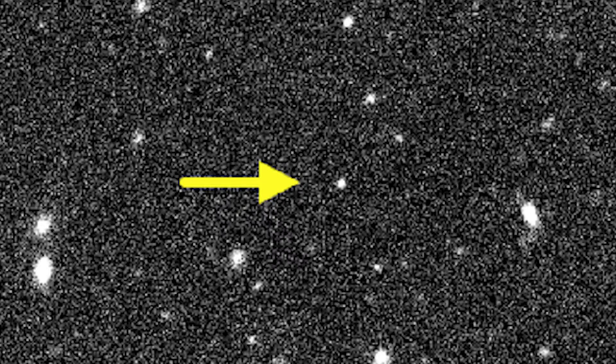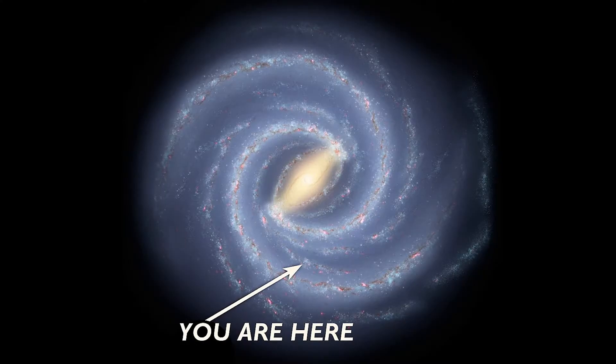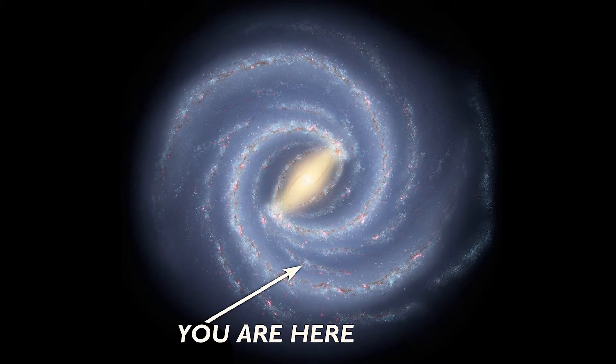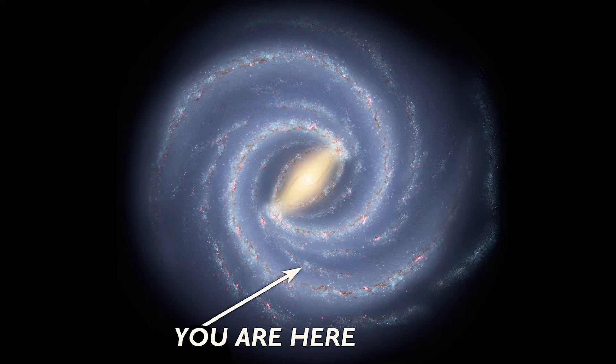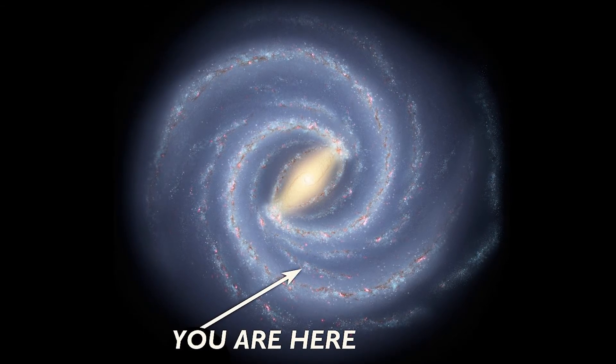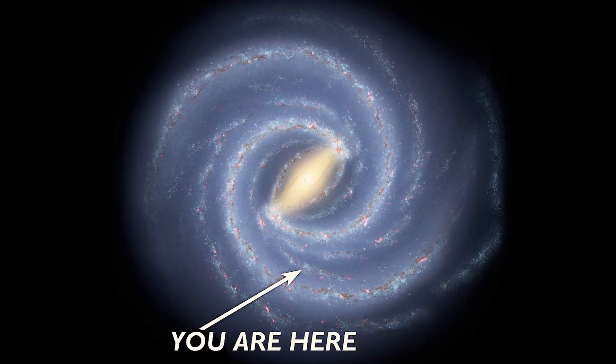So far, there are only two confirmed rogue planets. But considering the fact that the Milky Way contains an estimated 400 billion stars, and the fact that there are more planets than there are stars, it's possible that there are plenty of rogue planets out there waiting to be discovered.